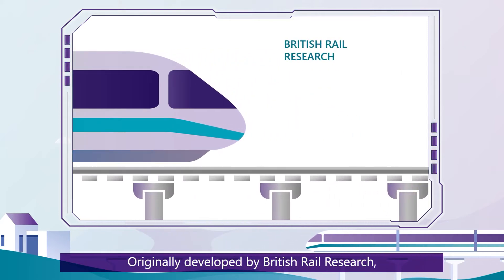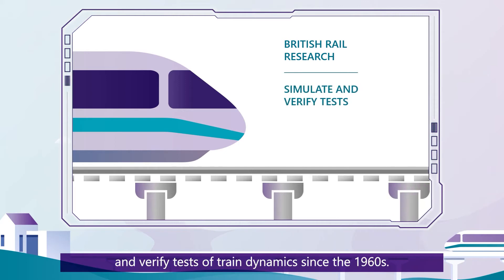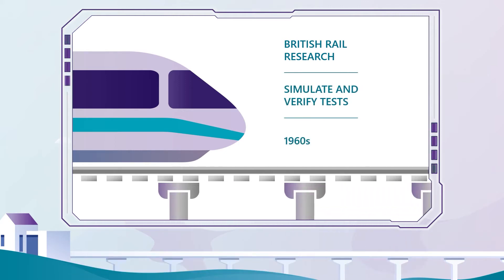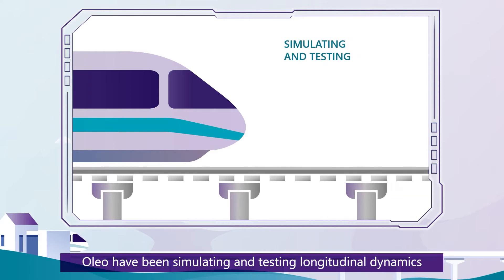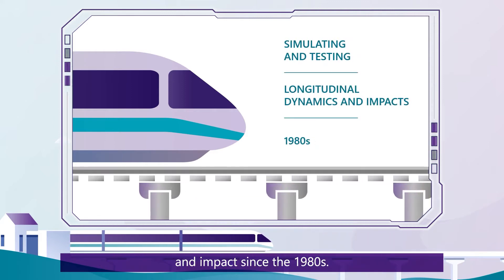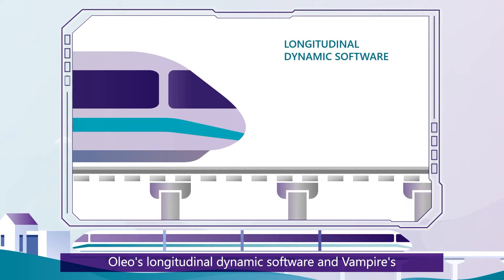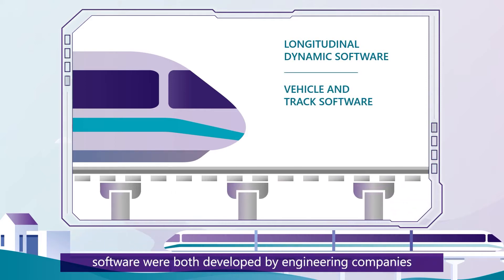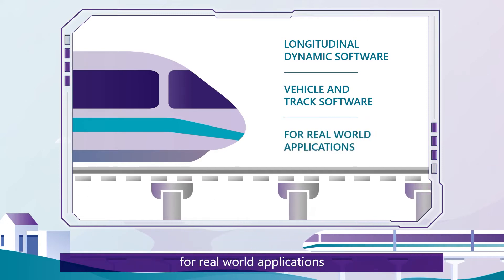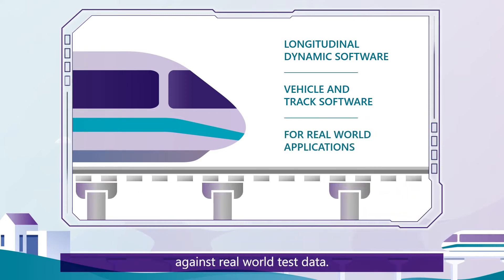Originally developed by British Rail Research, Vampire has been used to simulate and verify tests of train dynamics since the 1960s. Oleo has been simulating and testing longitudinal dynamics and impacts since the 1980s. Oleo's longitudinal dynamic software and Vampire's vehicle and track software were both developed by engineering companies for real-world applications and have been extensively benchmarked against real-world test data.